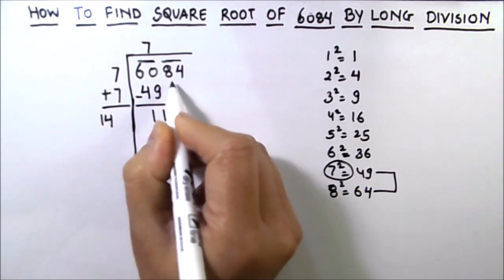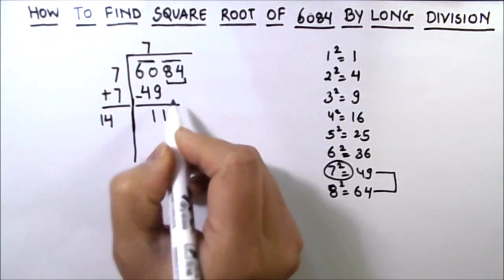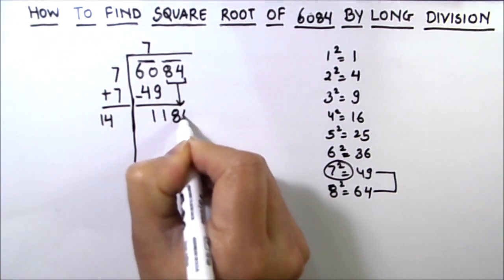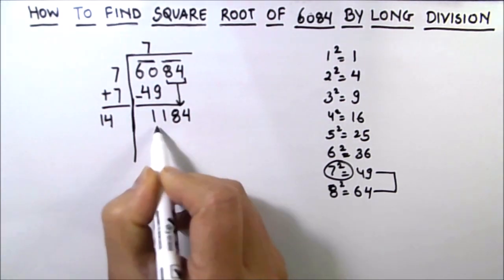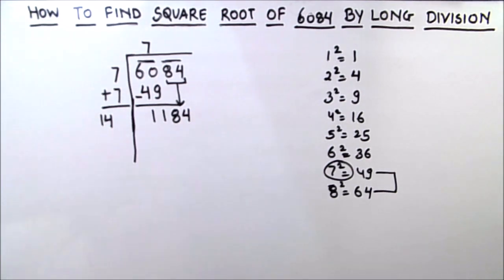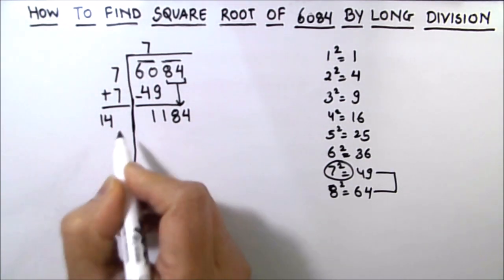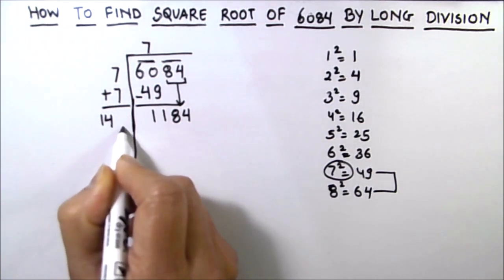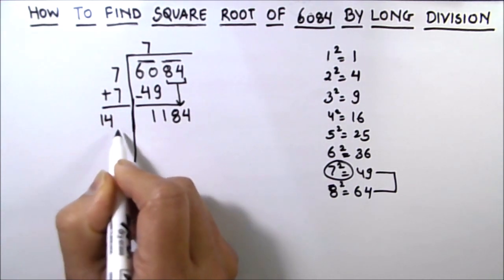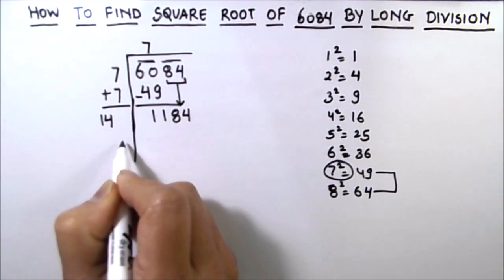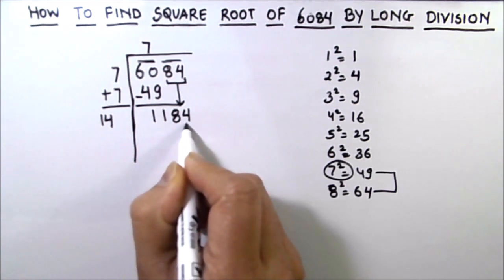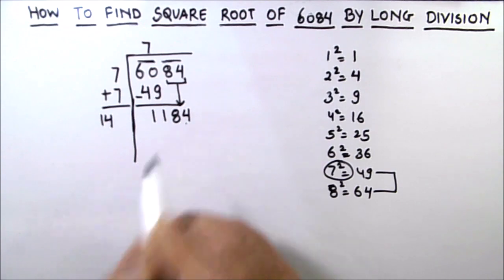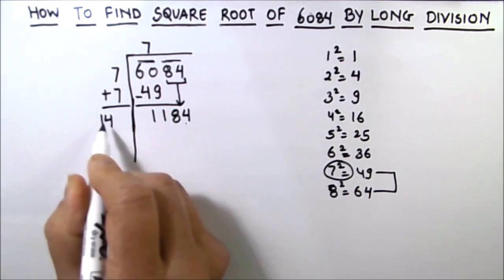The next step is to drop down the next pair of digits. So our next pair of digits are 84. So we will drop down 84. So our dividend is now 1184. And we need to find the divisor here by annexing a digit in front of 14. And the digit should be such that product of the digit with the same digit should be equal to 1184 or just less than 1184. Let's find the digit by using the trial and error method.